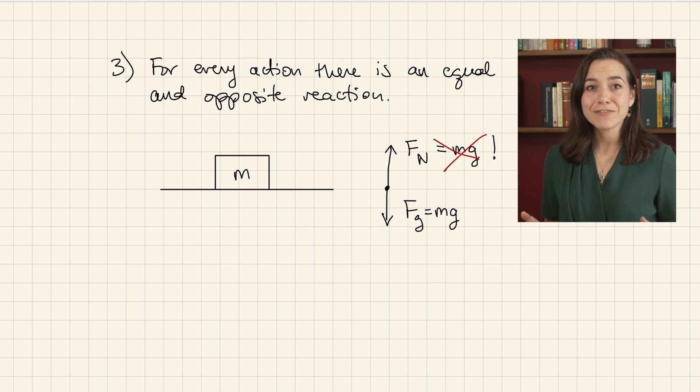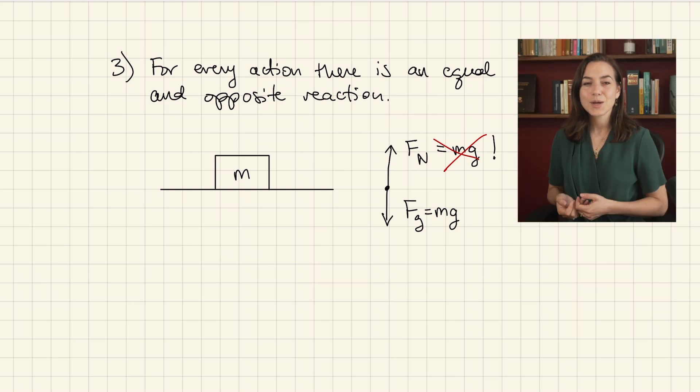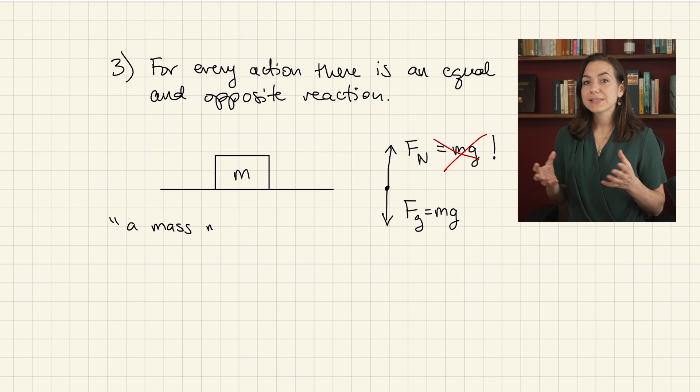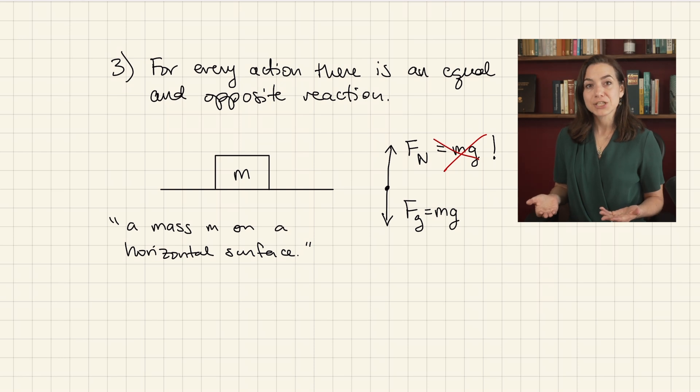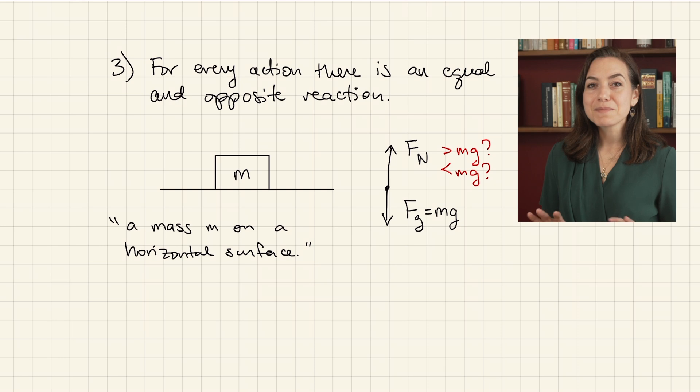So if you just wrote Fn equals mg blindly, you might make a mistake. Even in this seemingly simple example, Fn may not be mg. I have actually not given you enough information in the wording of the problem to determine what it is. What I said was, a mass m on a horizontal surface and the gravitational force is mg. Can you identify what is missing? And, under what circumstances would Fn have a magnitude that is greater than or less than mg? I'll reveal the missing information in a moment, but first, I want to briefly discuss why I think this is such a prevalent misconception.